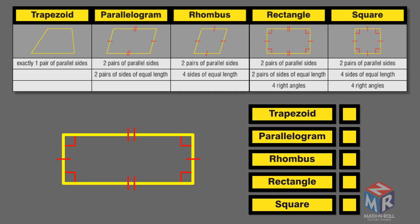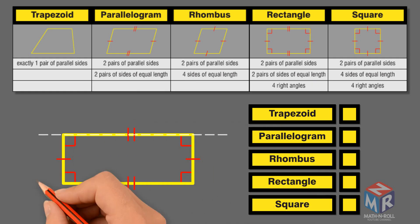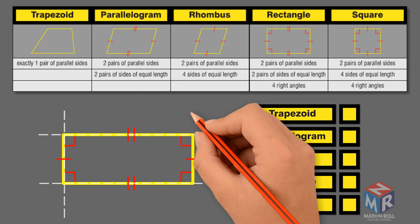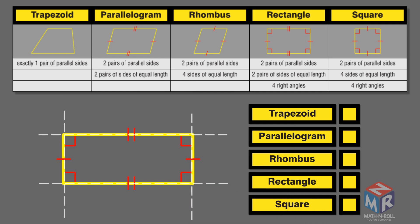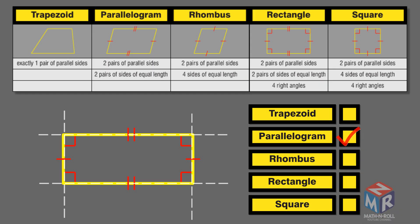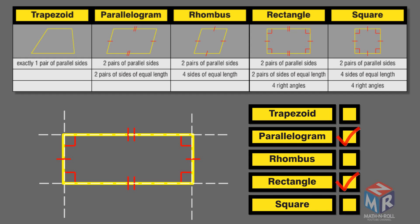Let's take a look at another quadrilateral. It is not a trapezoid because it has two pairs of parallel sides. It is a parallelogram because it has two pairs of parallel sides and two pairs of sides that are equal in length. It is not a rhombus because the sides are not equal in length. It is a rectangle because it has two pairs of parallel sides, two pairs of sides that are equal in length, and four right angles. And it is not a square because the sides are not equal in length.